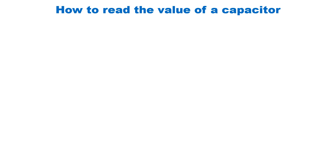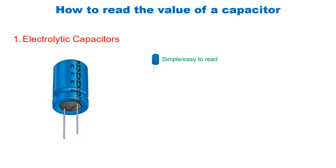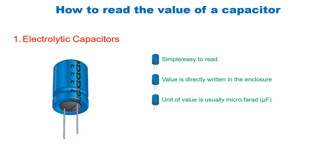Let's look at how to read capacitor values. For electrolytic capacitors, the value is very easy to read — it's written directly on the enclosure, usually in microfarads. These are slightly larger than other capacitor types. Because their dielectric is an electrolytic gel, the maximum working voltage is also printed on the body. If exposed to a voltage higher than that maximum, the gel breaks down and causes a short circuit.